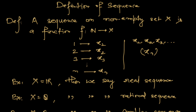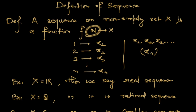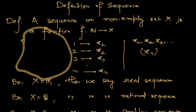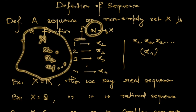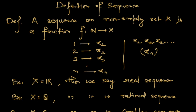A sequence on any non-empty set — suppose you have a non-empty set and you want to define a sequence on that set — is a function from the set of natural numbers to that set. So if you have a set X and you want to make a sequence from the elements of X, like x1, x2, x3 and so on, this is a function from the natural numbers to X, and any such function is called a sequence.